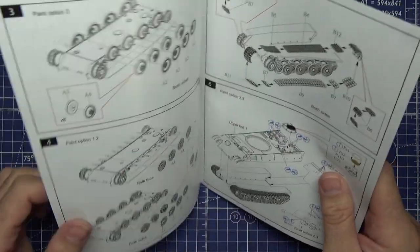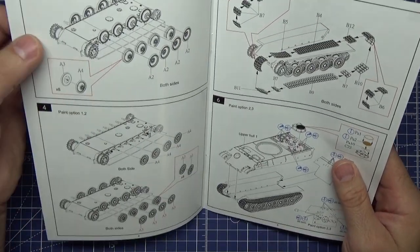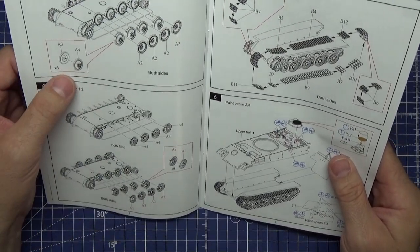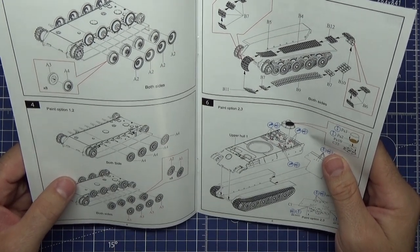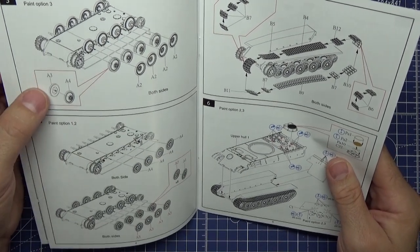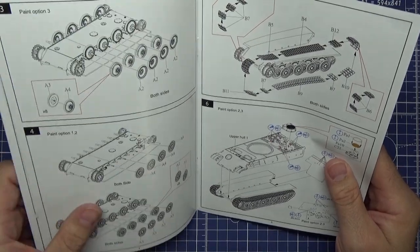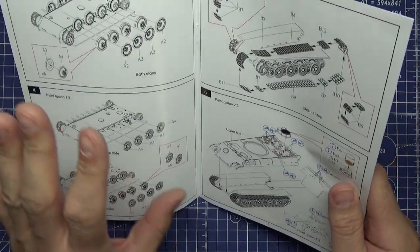Same again showing the road wheels on both sides. These I believe are the different options - you've got your steel wheel or the other. I'd have to look more into the kit before I say that 100%.